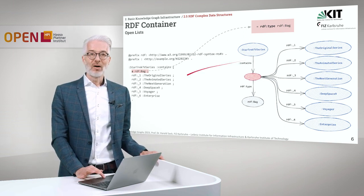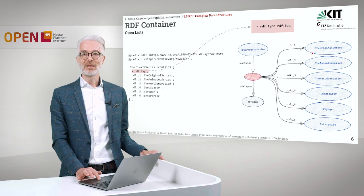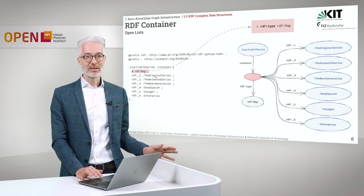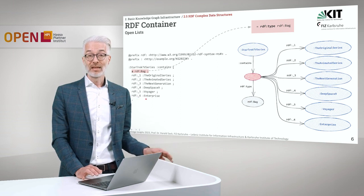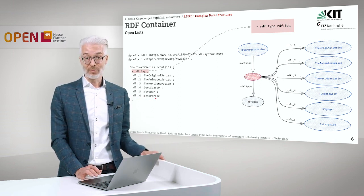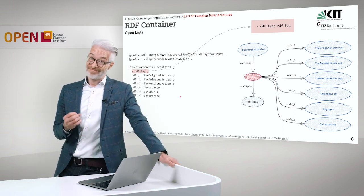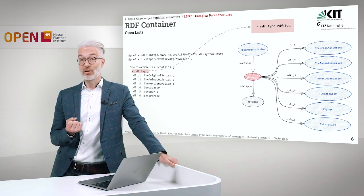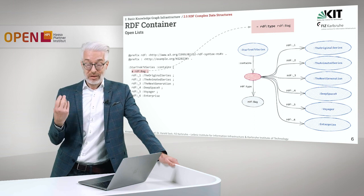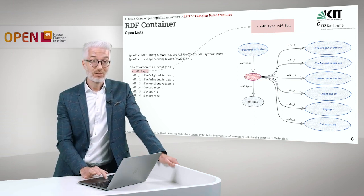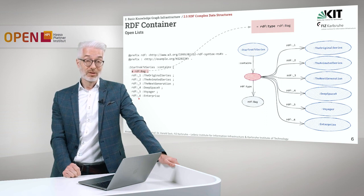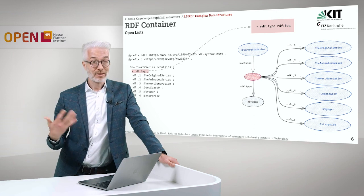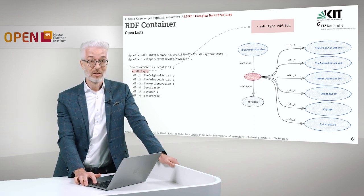Then come all the new properties: RDF underscore one, underscore two, and so on. You can simply sum up the items you want to aggregate — the original series, the animated series, and so on. If you want to include a new one, you would include RDF underscore seven and then include a new series. But potentially, one of the drawbacks is that you would have to introduce an infinite number of new properties, because all of them are new properties — underscore five is a different property than underscore six. Sometimes you don't want that, and therefore the idea was to introduce something where you don't have to introduce further properties: the so-called collection.